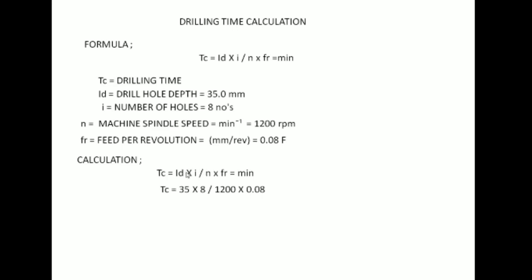tc is equal to: id is 35mm depth, we can use the whole into 8. So n, the spindle RPM, is 1200. We can use fr feed 0.08. So we can use the formula step by step: 35 × 8 = 280, divided by 96 = 2.91.